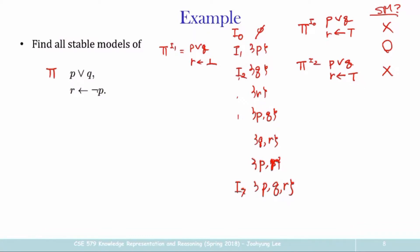For I3, which is {R}: we don't even need to compute the reduct. I3 does not contain P or Q, so it cannot satisfy the first rule 'P or Q'. Since each rule must be satisfied, I3 cannot be a model of any reduct. So I3 is not a stable model.